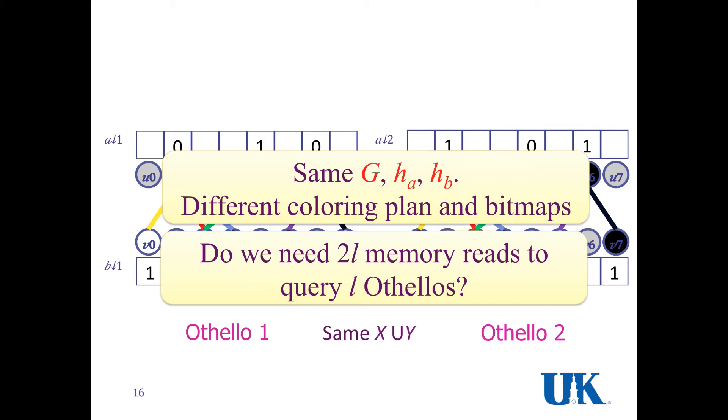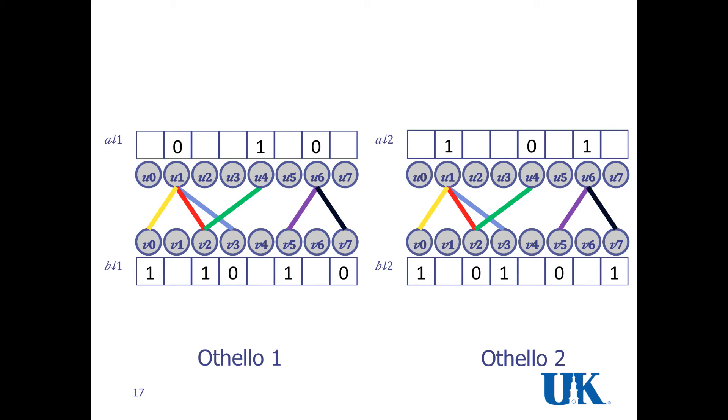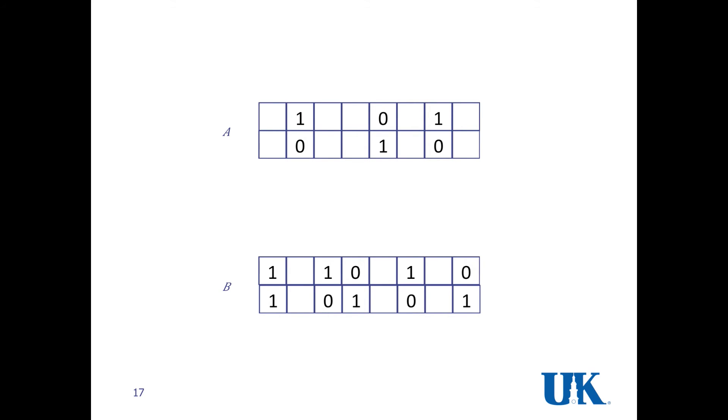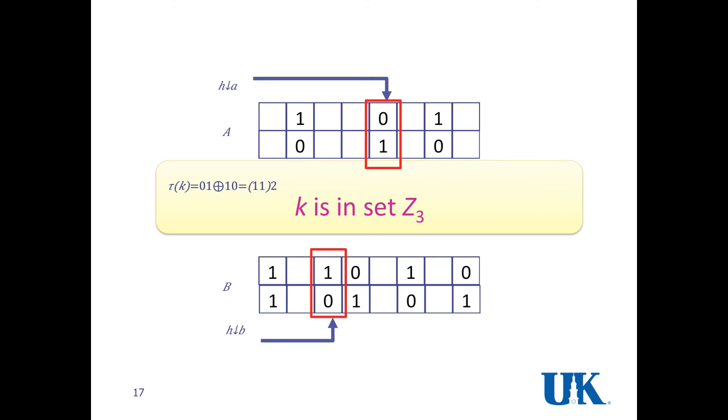Do we need two L memory reads to query L Othellos? We have in total L Othellos in a forwarding information base. The answer is no. We can organize those bitmaps in a particular pattern. We have two arrays, A and B. Each array is a set of elements, and each element is an L bit value. When we query a name, we just map the name to an element of each array. We take the exclusive OR of those two values, and we get our results: 1, 1, which means K is in set Z3. We only need two reads to query L Othellos, which is very efficient and fast.